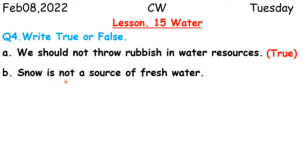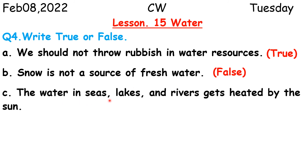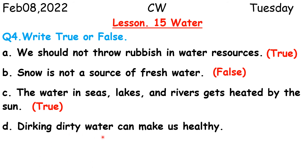Statement B: Snow is not a source of fresh water. This sentence is false because rain and snow are sources of fresh water on Earth. Statement C: The water in seas, lakes, and rivers gets heated by the sun. This sentence is true. Statement D: Drinking dirty water can make us healthy. This sentence is false because dirty water is harmful and unhealthy for us.